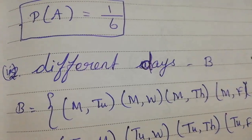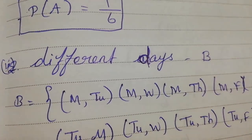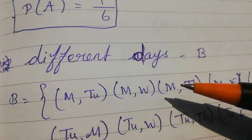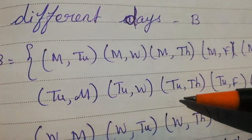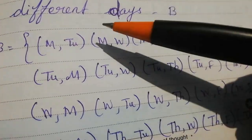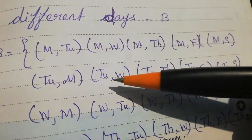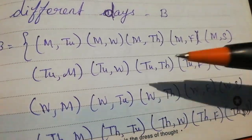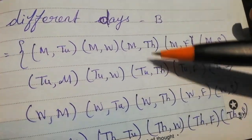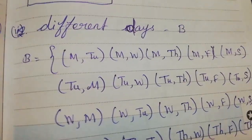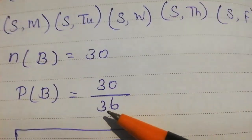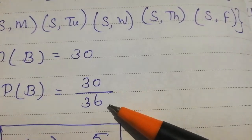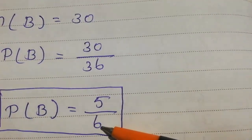For different days, we list outcomes where the two customers visit on different days. The same-day pairs are Monday-Monday, Tuesday-Tuesday, Wednesday-Wednesday, Thursday-Thursday, Friday-Friday. N(B) = 30. Therefore P(B) = 30/36 = 5/6.